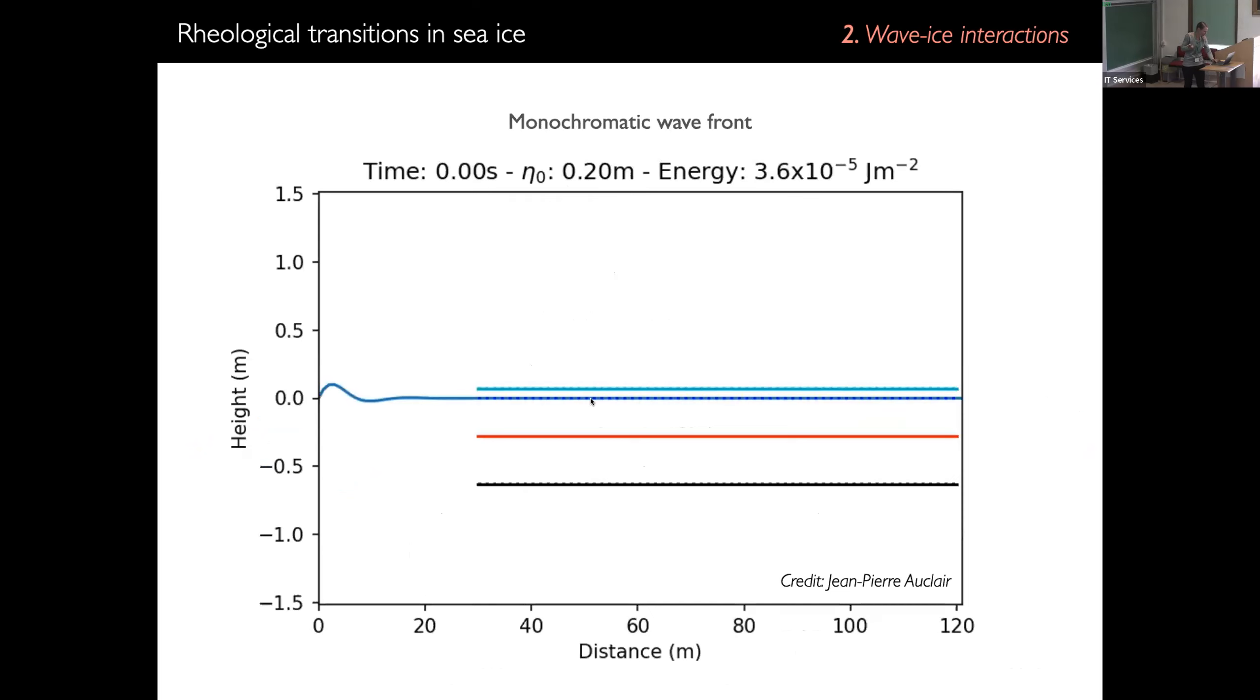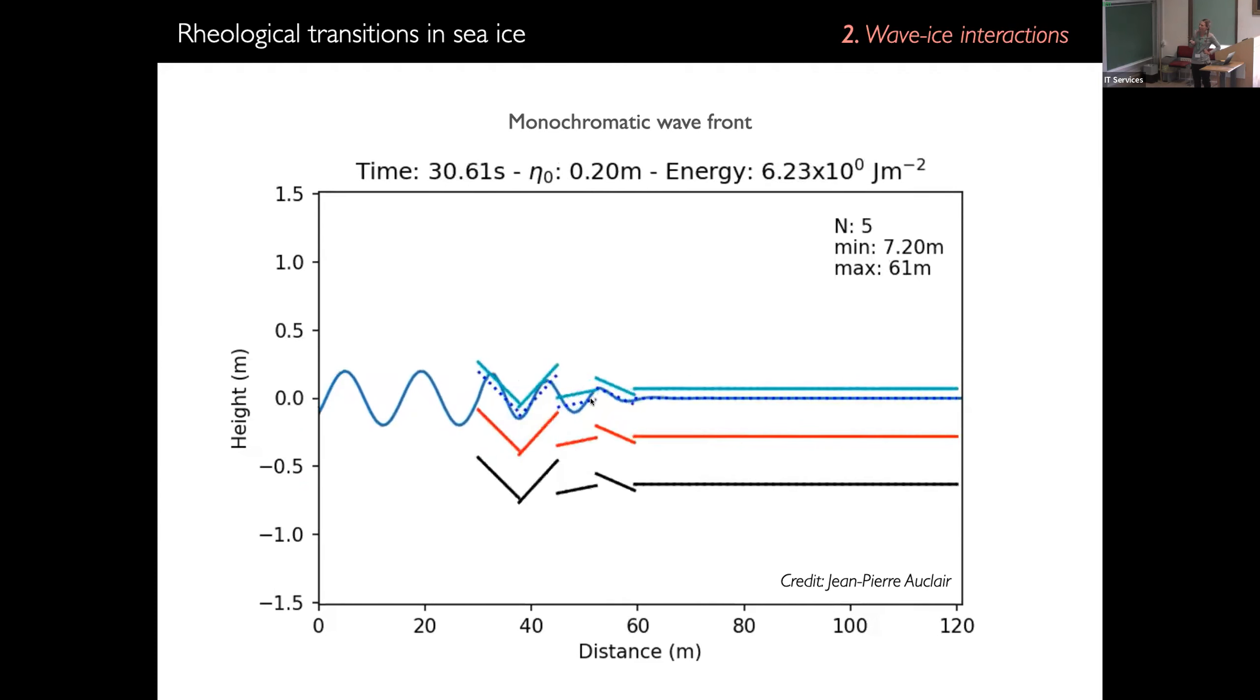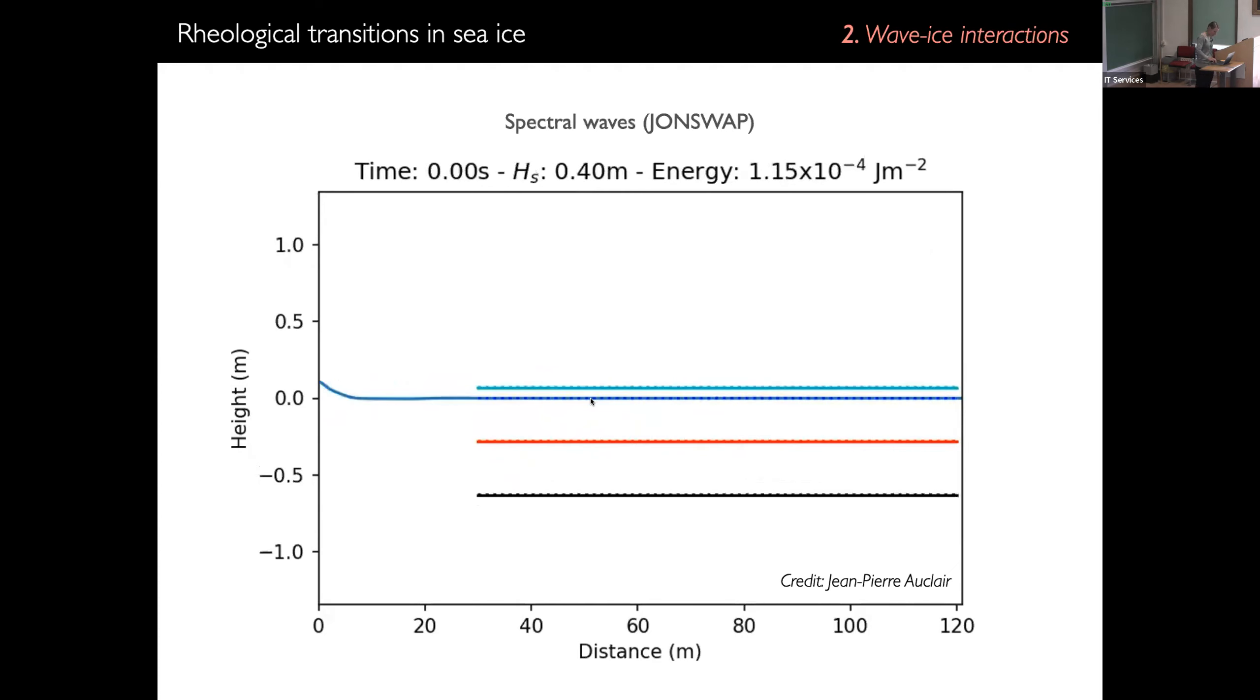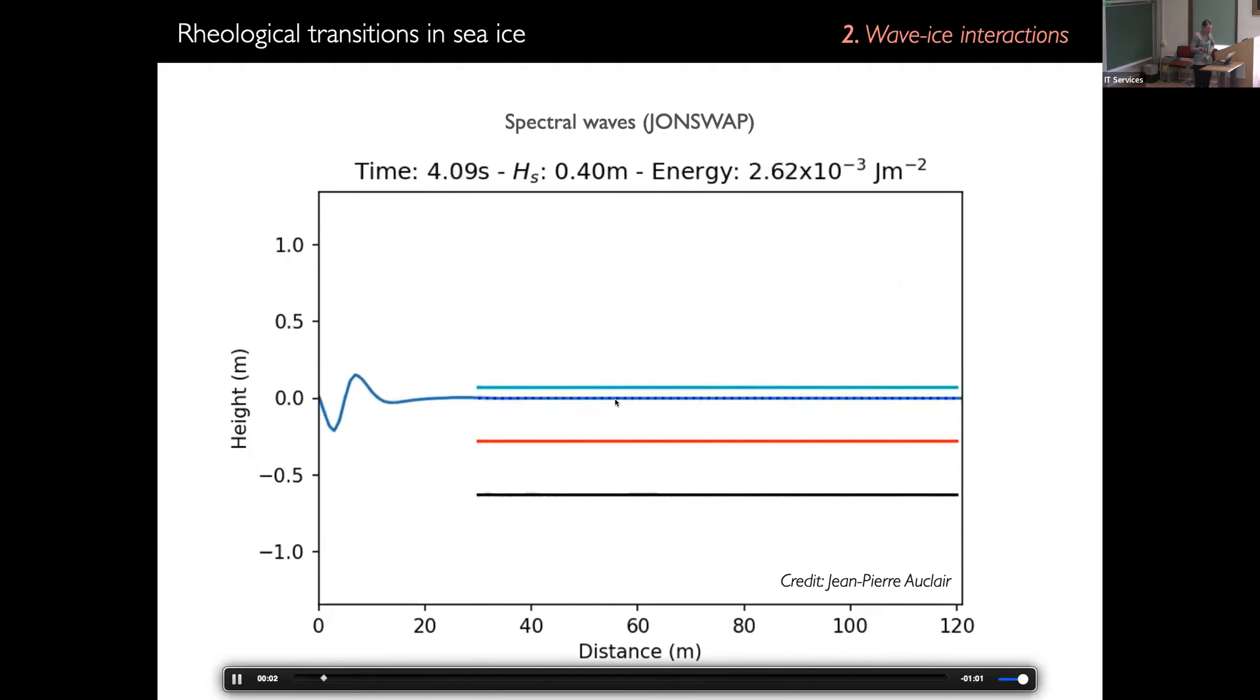Then, I'm just going to show you videos of what it gives. So the lines are basically the top of the floe, the middle and the bottom. And you have the flotation line in dotted blue line here. So here's an example for a monochromatic front wave that enters the pack. And so you see that it breaks the ice. The height is very exaggerated relative to the distance. So this is why you have the impression that the floes get elongated as they move. So this is one example for a monochromatic wave. But Jean-Pierre has even better runs when he uses spectral waves. And this is what it gives you. So you're basically fracturing the plate. And then as the wave enters, the fracturing front enters the pack.